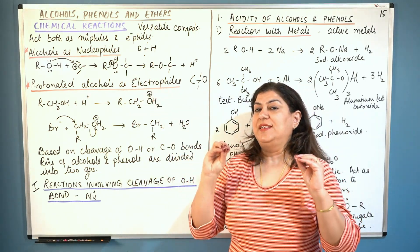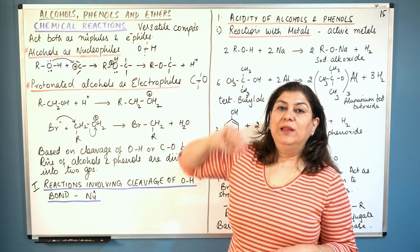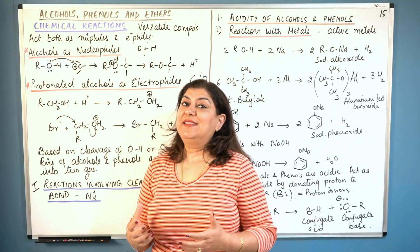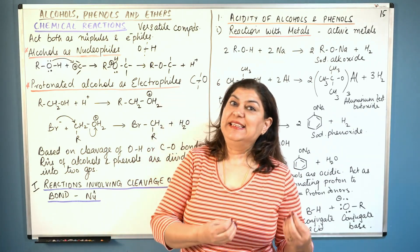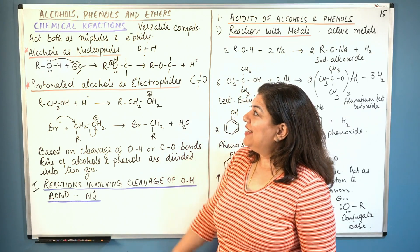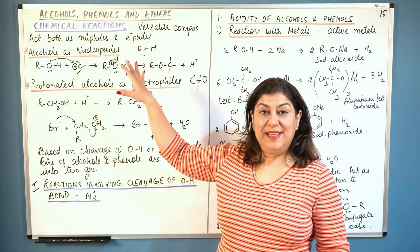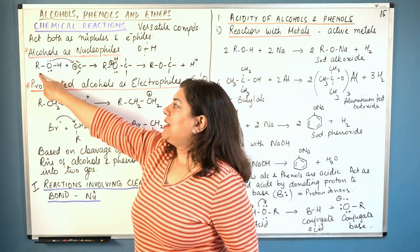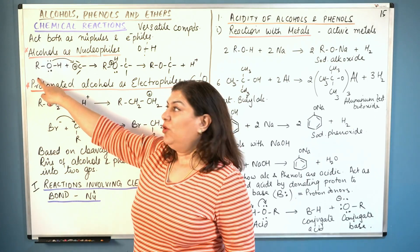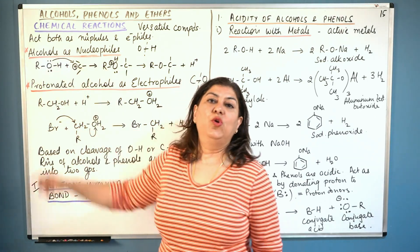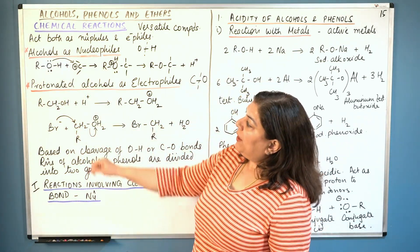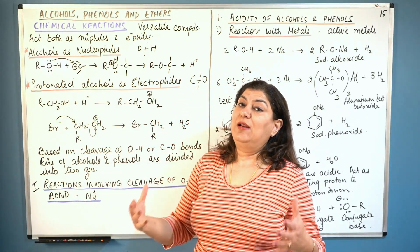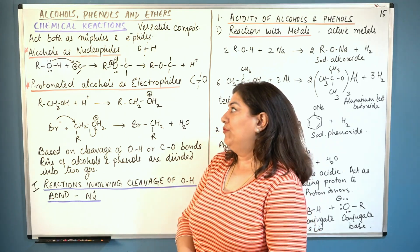Alcohols and phenols are versatile compounds. Why do we call them versatile compounds? Because in their chemical reactions they act both as nucleophiles and electrophiles. Alcohols act as nucleophiles when the bond between oxygen and hydrogen breaks — an alcohol is ROH where R stands for an alkyl group and the functional group is OH, the hydroxyl group. When the O-H bond breaks, the alcohol or phenol acts as a nucleophile.